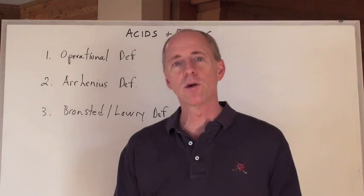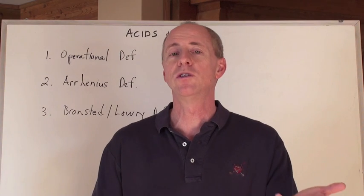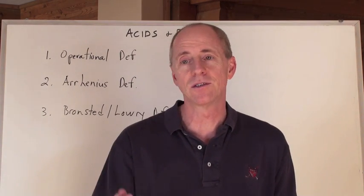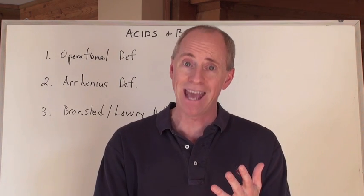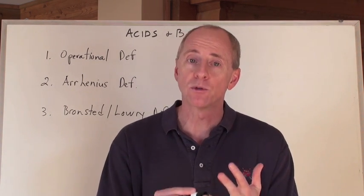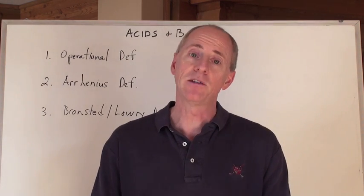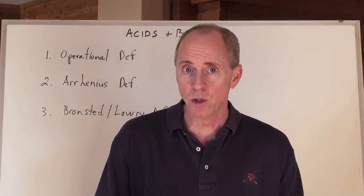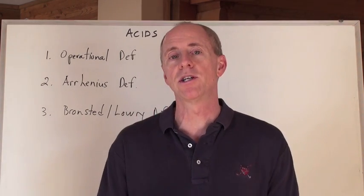Operational definition. If you can perform an operation to define an acid or a base, that helps you to determine what they are. For instance, an acid is going to be able to react with active metals to form hydrogen gas, H2 gas. They're going to turn blue litmus paper red. That's an operational definition of an acid. A base would be that it turns red litmus paper blue, and bases neutralize acids. Those are operational definitions.